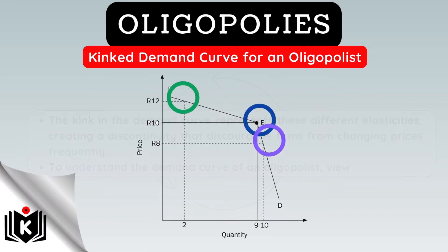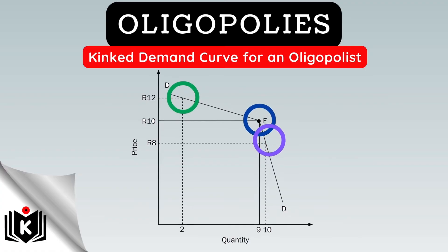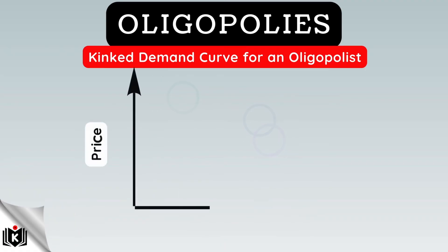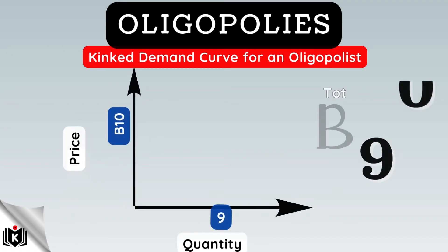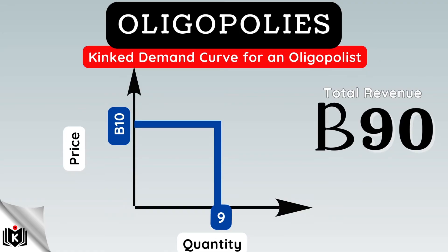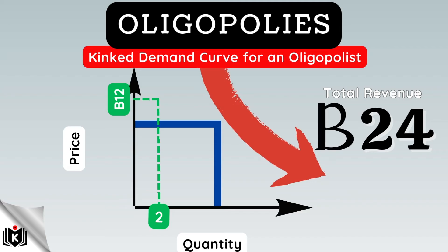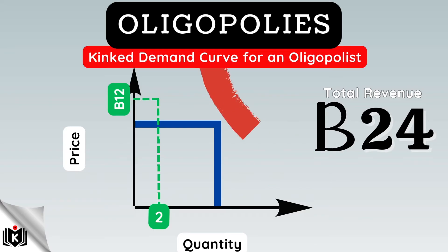To understand the demand curve of an oligopolist, let's follow this graph. Suppose the oligopolist is selling at the original or present price of $10, and 9 units of output are sold. Total revenue is $90. If the firm tries to increase profit by increasing the price by $2 to $12, the quantity demanded would fall to 2 units and the total revenue would decrease to $24.